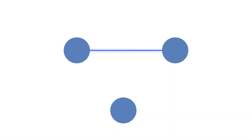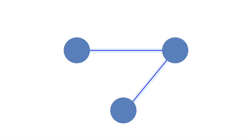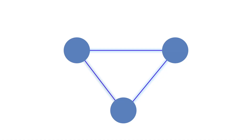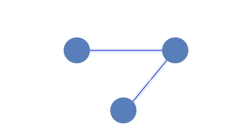Transitivity works like this: imagine I'm friends with Jim — Jim's filming me, so I hope we're friends. Say Jim and I have a third friend. If a network is highly transitive, then Jim and I are also going to be friends with that third friend, and we form what's called a closed triad. In networks with lower transitivity, we might each be friends with that third person individually, but we're not all friends with each other.